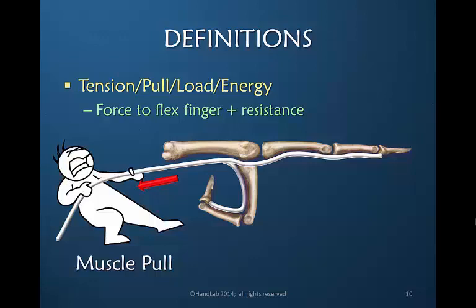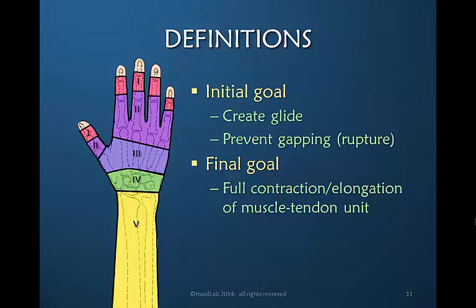Pulling proximally on a flexor tendon flexes the distal joints. The resistance that's added can be highly variable. And as we will discuss, in the beginning we desire that there be no resistance — the finger provides enough resistance in the very early stages of rehabilitation. We're aware of the five zones of flexor tendons as originally described by Verdon. Our initial goal in working with a tendon patient is to create some glide of the tendon but not enough glide or pull or force that we create gapping or rupture of the repaired tendon. So we're looking for balance in the early stages between enough motion but not too much motion.